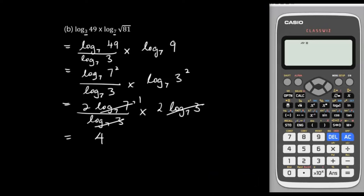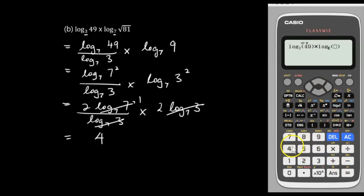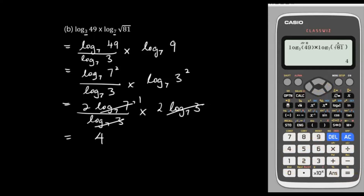Now we're going to double check our answer using the Casio Classwiz calculator. Go to the log button, key in base 3, go to the right and enter 49, then go to the right, press times, then log with base 7 and key in square root of 81. Press equals — the answer is 4.